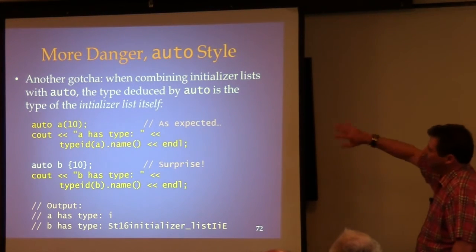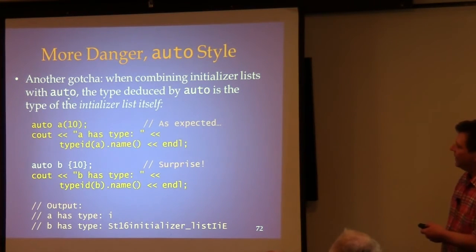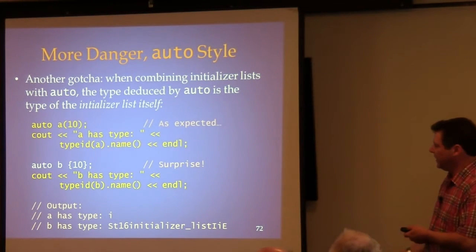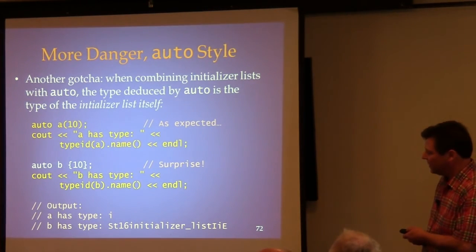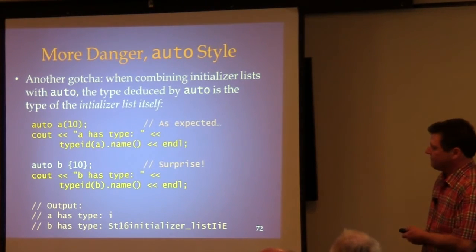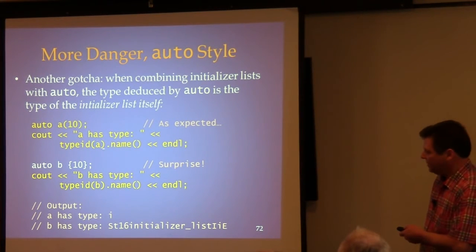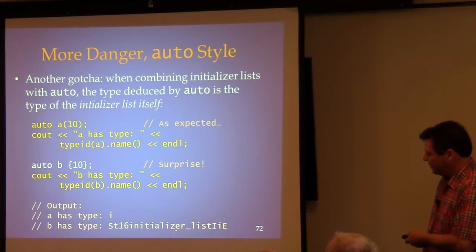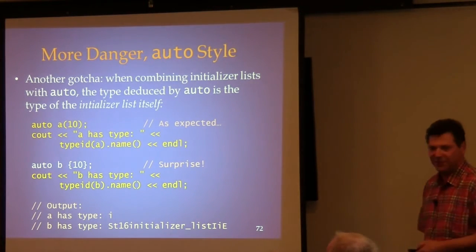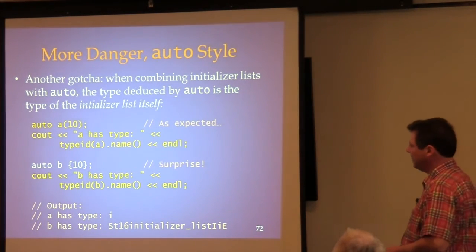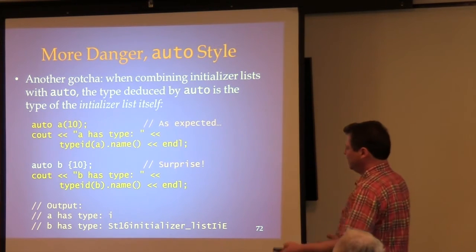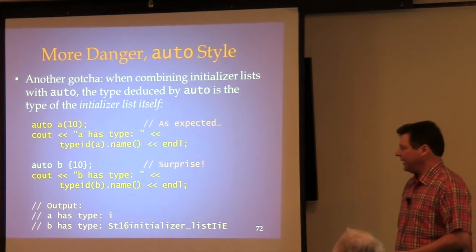Another gotcha: mixing auto with an initializer list. If you use auto and initialize with braces like 'auto b{1, 2, 3}', the deduced type is not what you'd expect — it becomes std::initializer_list of something, not an int or a container. Using RTTI to check confirms this. There's no universal solution: just don't mix auto and initializer lists.